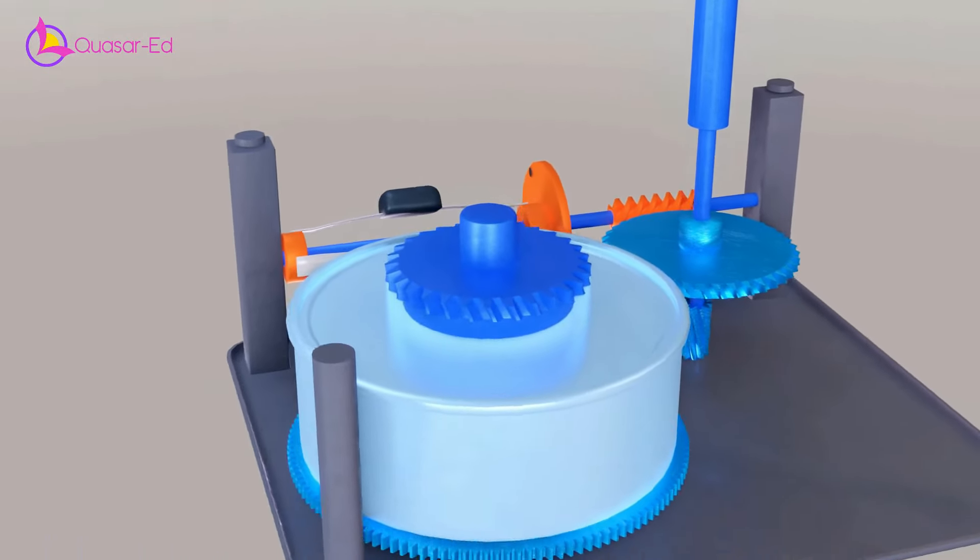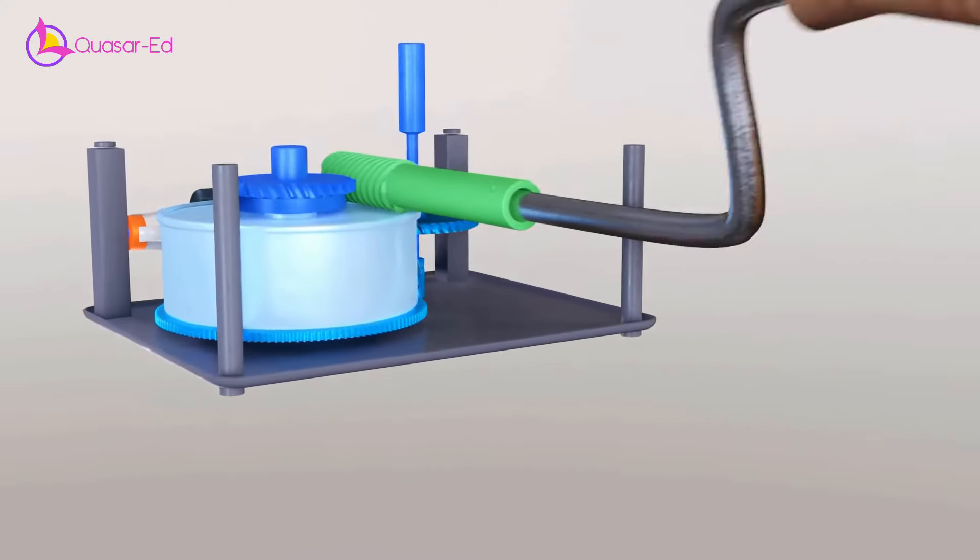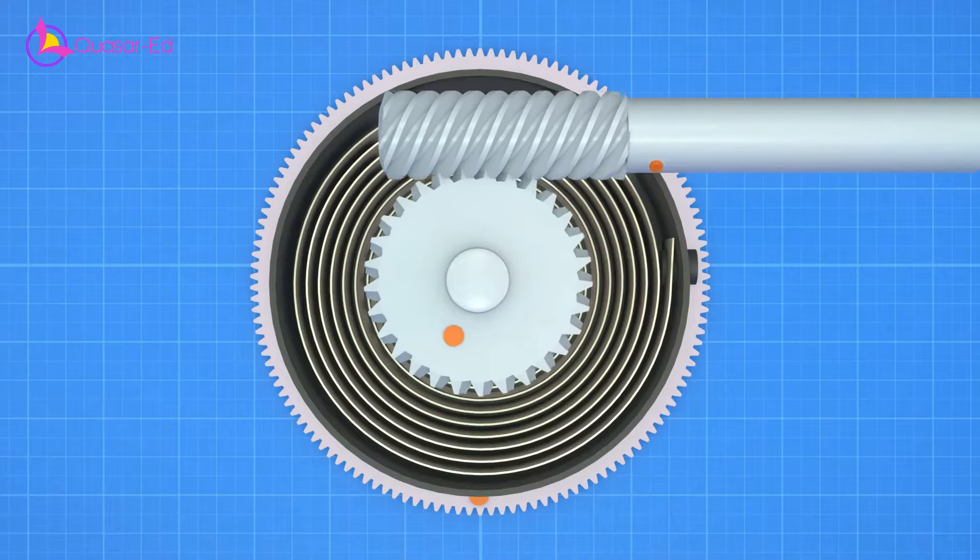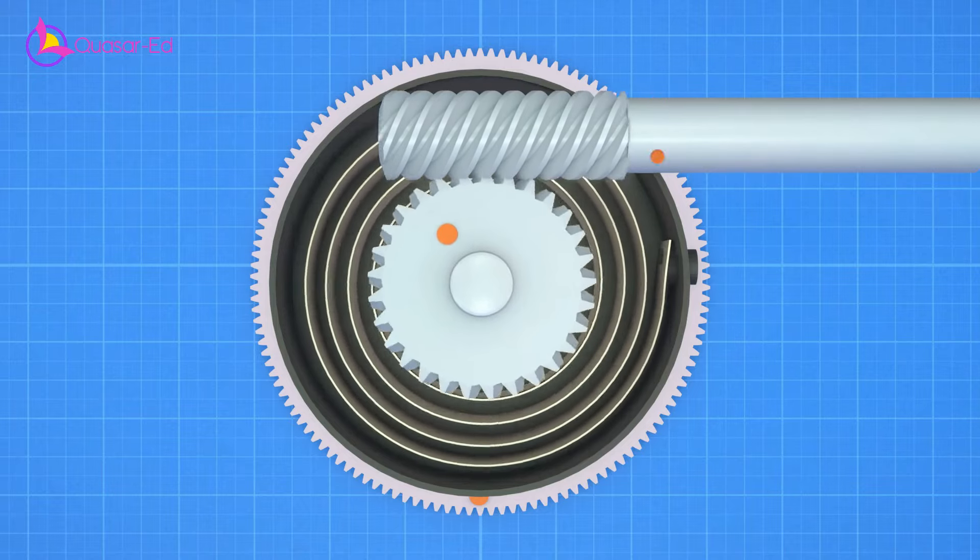The gear shaft is driven by the worm gear which has a mounting hole at the end. If you wind up the spring and release it, it will quickly go back to its original position.